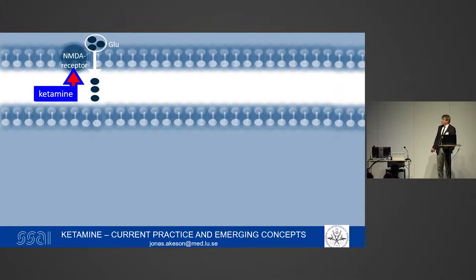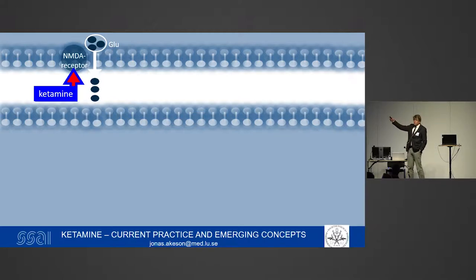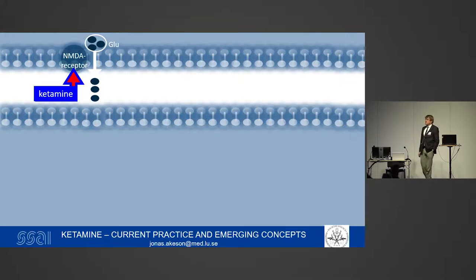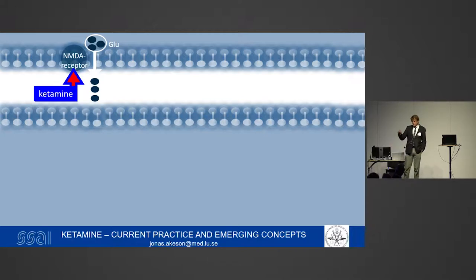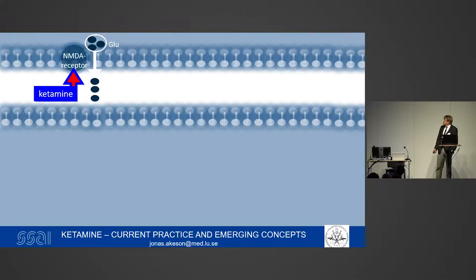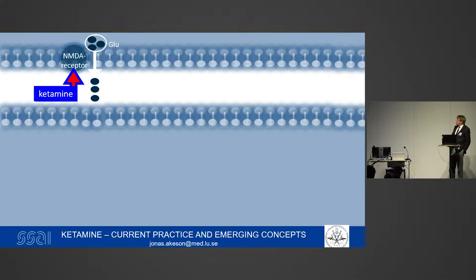I'll try to show you how this may work. What is currently believed to happen between the pre- and post-synaptic nerve cells — these are cell membranes shown here. We don't know which of these mechanisms are involved in anesthesia, in analgesia, or in the antidepressive effect. But we know that ketamine has these effects. Ketamine depresses NMDA receptors, and by doing that it promotes release of glutamate from the pre-synaptic membrane.